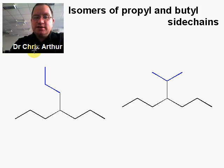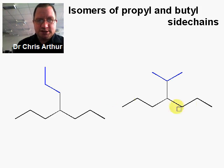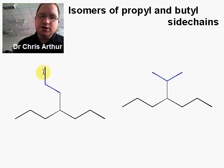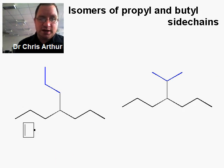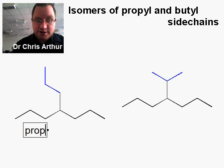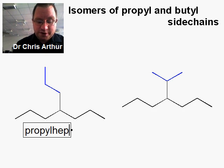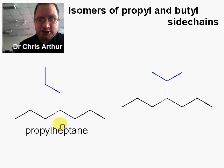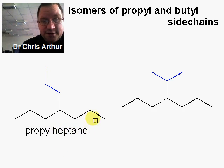I'm going to spend a little bit of time in this video going through how it works. The simplest case is propyl — we'll look at butyl in a moment. The compound on the left, based on the rules from previous lectures, you'd hopefully be able to call propylheptane: a propyl group attached to a heptane seven-member chain.